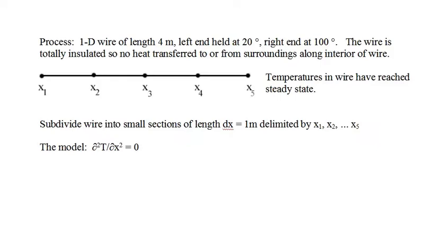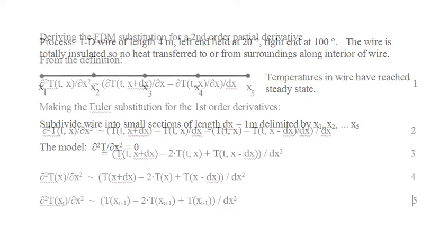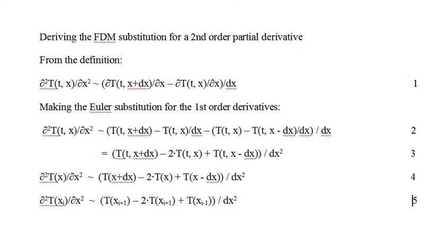The model is the differential equation: the second partial derivative of temperature with respect to x is zero, and the method we'll use is the finite difference method. The finite difference method is an extension of Euler's method to partial differential equations, and we will make the finite difference method substitution for the derivative in the model. We start with the equation used in the definition of second-order partial derivatives — equation 1 — make Euler's substitution for the first-order derivative to get equation 2, simplify to get equation 3, and that's the finite difference method substitution for second-order partial derivatives.